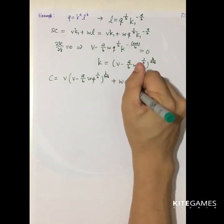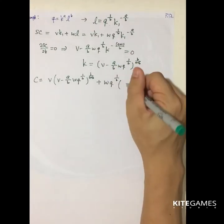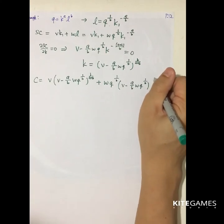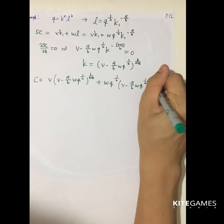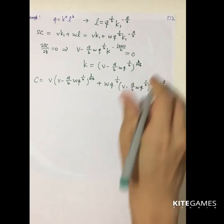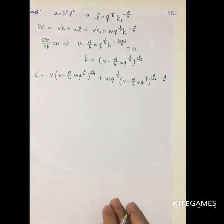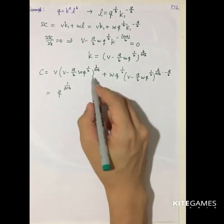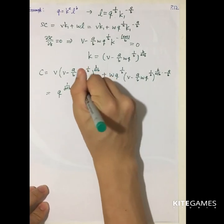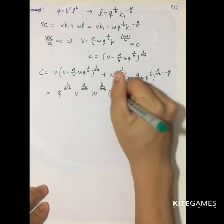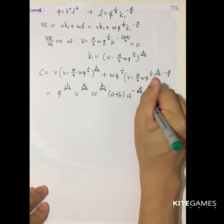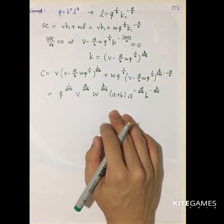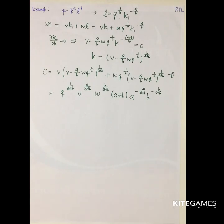After substituting and simplifying, the long-run total cost comes out to Q to the power 1 over A plus B, times a constant involving V and W raised to powers A over A plus B and B over A plus B respectively, times terms with A and B. This is the standard long-run total cost function for the Cobb-Douglas production function. With this, we have completed the discussion of the cost function.